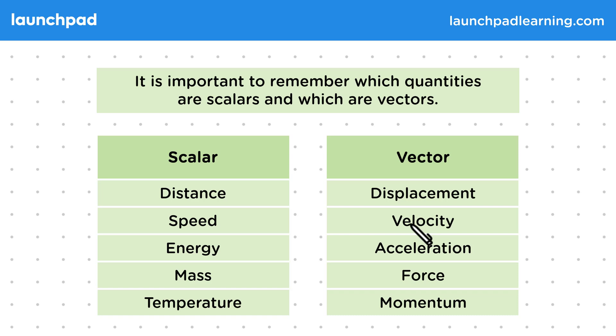The rest of the vectors we'll be using don't have a scalar equivalent though. Acceleration is a measure of how velocity changes, so it needs a direction like velocity. Forces are actions that change the motion of an object, so it's very important we define directions for these. And lastly, momentum is the product of mass and velocity, which will have the same direction as the velocity used.